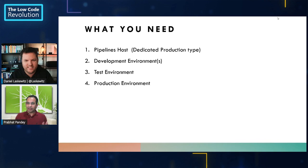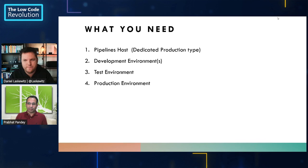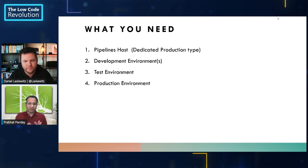Let me share a few steps that you need to get started with your pipeline setup. First, you need a pipeline source — generally it should be a dedicated production-type environment. And then, of course, you need a development environment where you are going to deploy. Sometimes it's like: source, your development environment, your test environment, and then production environment. So these are the four environments needed to set up your pipelines.